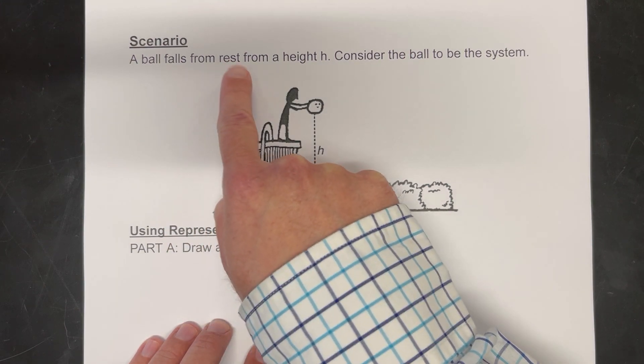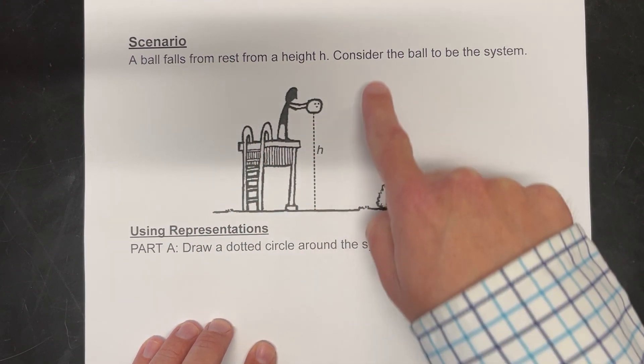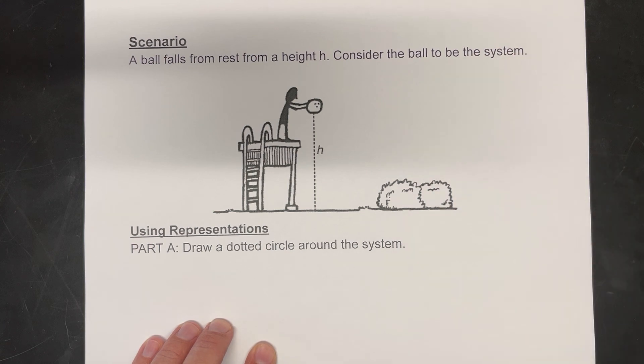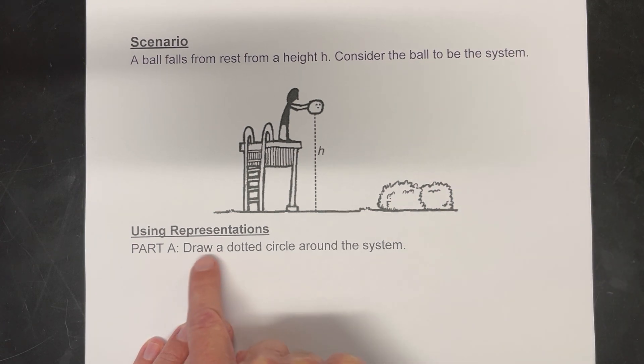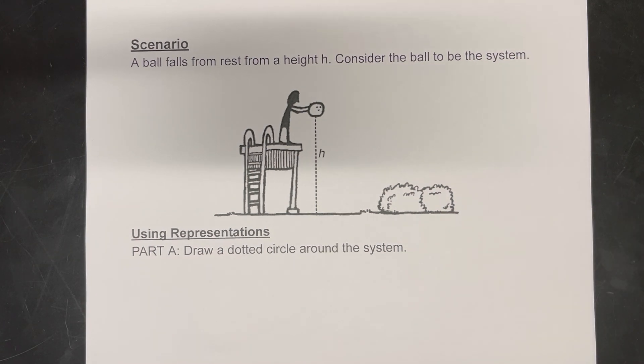So they say a ball falls from rest from a height H. Consider the ball to be the system. So it says draw a dotted circle around the system.